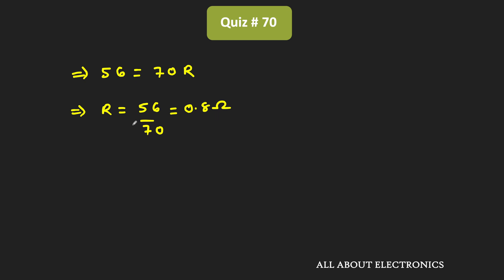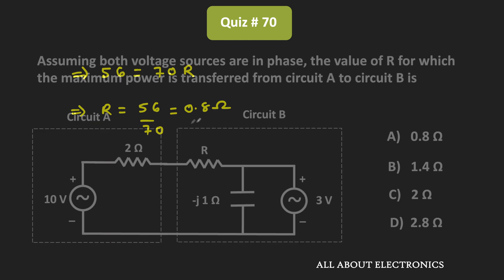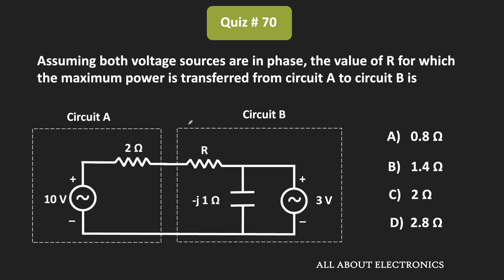From this we can say that when the value of R is equal to 0.8 ohm, the power transferred from circuit A to circuit B is maximum. Therefore, for the given question, option A (0.8 ohm) is the correct answer.